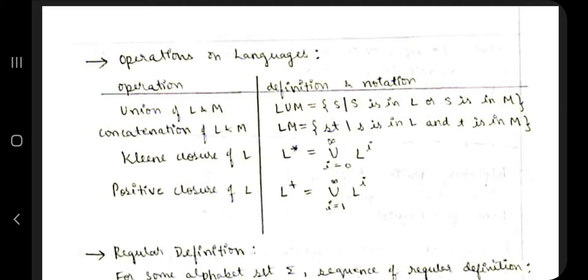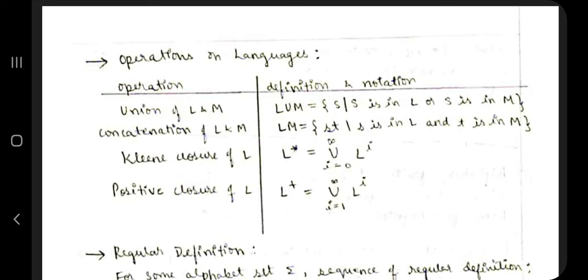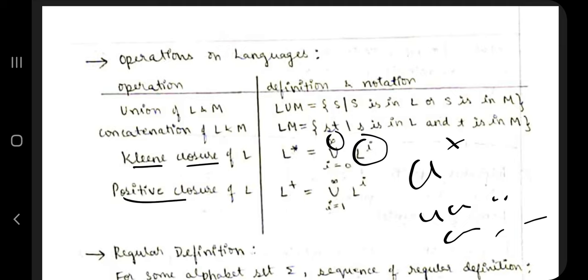Commonly used operations on languages include union (strings in either L or M), concatenation (combining strings, e.g., 'cat' + 'dog' = 'catdog'), Kleene closure (zero to infinity repetitions, e.g., a*), and positive closure (one to infinity repetitions). A regular definition assigns a regular expression to each symbol in the alphabet. Identifiers are defined as: letter followed by (letter or digit)*, with letters being a–z and digits 0–9.